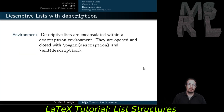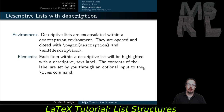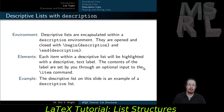Descriptive lists are encapsulated within a description environment. They're opened and closed with begin description and end description delimiters. Each item within a descriptive list will be highlighted with a descriptive text label. The contents of the label are set by you through an optional argument fed to the item command through its square brackets. The descriptive list on this slide is an example of a description list.